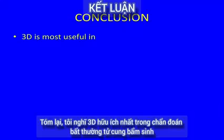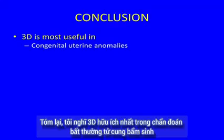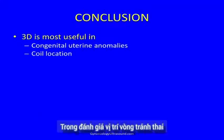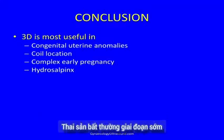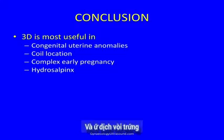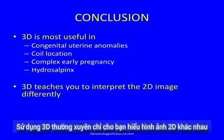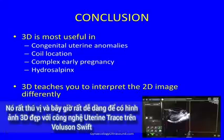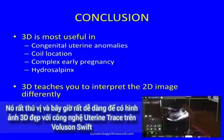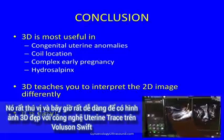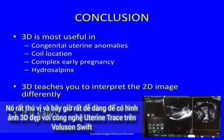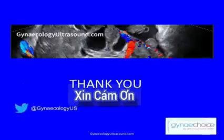In conclusion, 3D is most useful in congenital uterine anomalies, coil location, complex early pregnancy, and hydrosalpinx. Using 3D regularly teaches you to interpret the 2D image differently — it's very interesting, and it has become so easy to take a nice 3D image. Thank you.